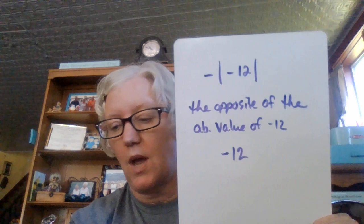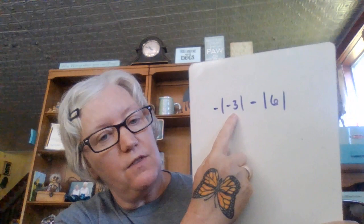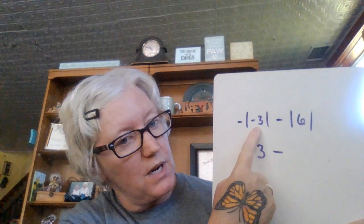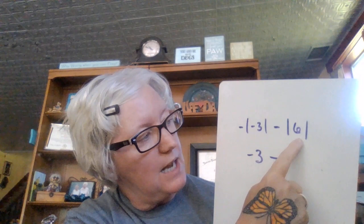What if you had something like this? Then you just got to start being really careful about your negatives and positives. This is the absolute value of negative three, which is three. This turns it back to a negative three. So absolute value of negative three is three. This turns it back to a negative three. So I want the opposite of three, which is negative three, minus the absolute value of six is six. Negative three minus six, you've got to remember your rules of integers when you're subtracting. That becomes plus a negative six, which is negative nine.